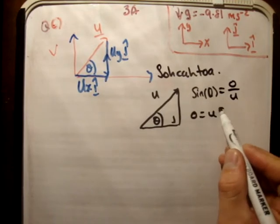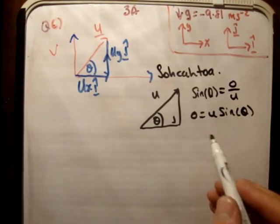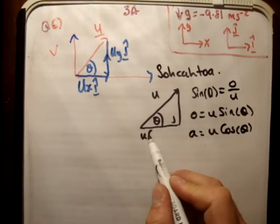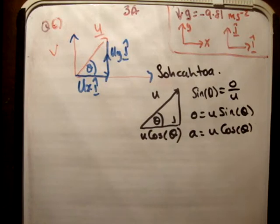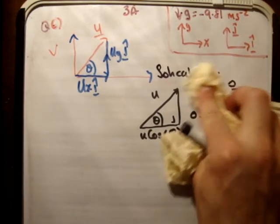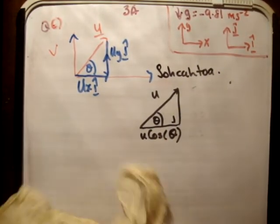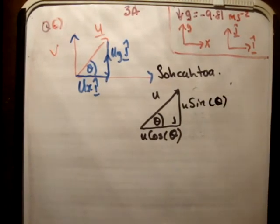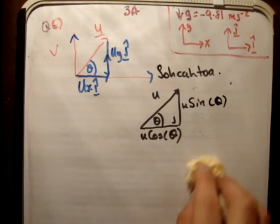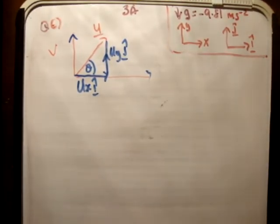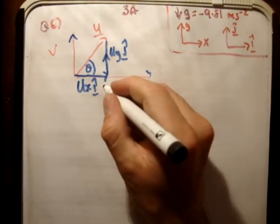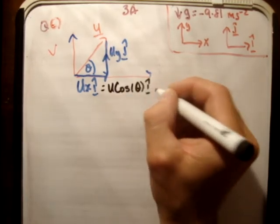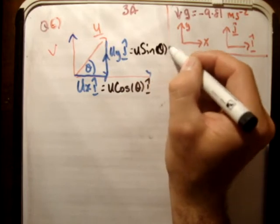So say, for example, we had a triangle here, which we call the hypotenuse of magnitude u, and this was theta here. Then we'll say sine theta is equal to the opposite, which is going to call O over u. Therefore, O is equal to u sine theta, and similarly, A, the adjacent, is equal to u cos theta. So this is u cos theta here, and this here is equal to u sine theta.